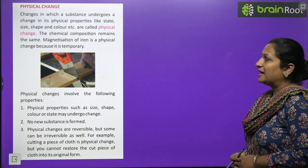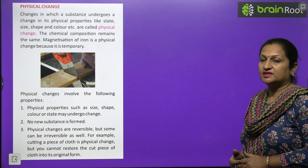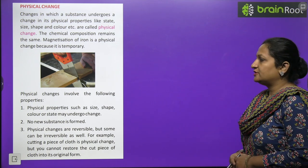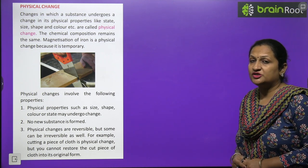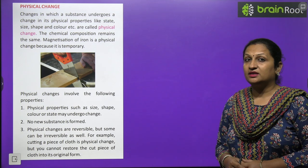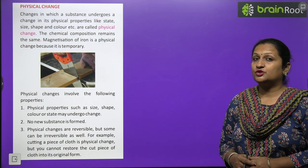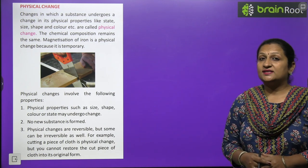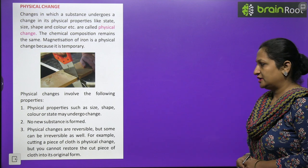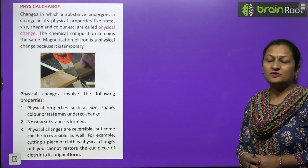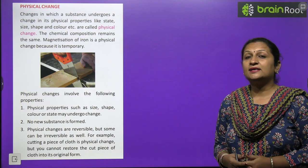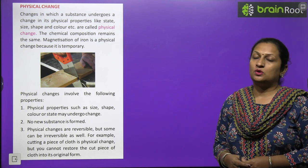The chemical composition remains the same in physical changes. Magnetization of iron is a physical change because it is temporary - as soon as the magnet is removed, the iron pieces fall down. Physical changes involve changes in size, shape, color, and state. For example, stretching a rubber band changes its size and shape, but when released it regains its original shape and size. No new substance is formed and composition does not change - so this is a physical change.